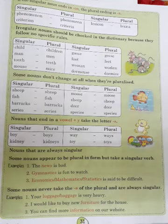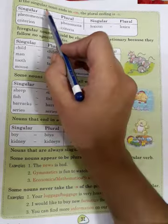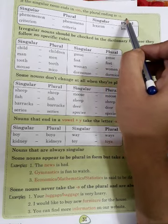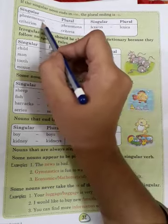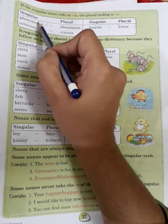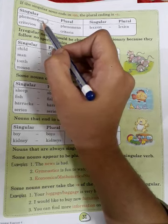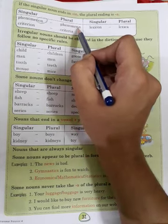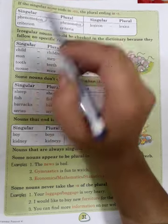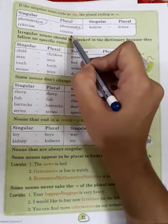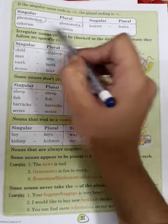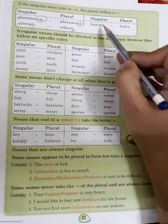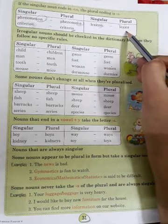Moving to page number 31. If a singular noun ends in -on, the plural ending is -a. For example, 'phenomenon' ends in -on, so the plural is 'phenomena'. Criterion → criteria, with -on removed and -a added. Lexicon → lexica, again -on is removed and -a is added.